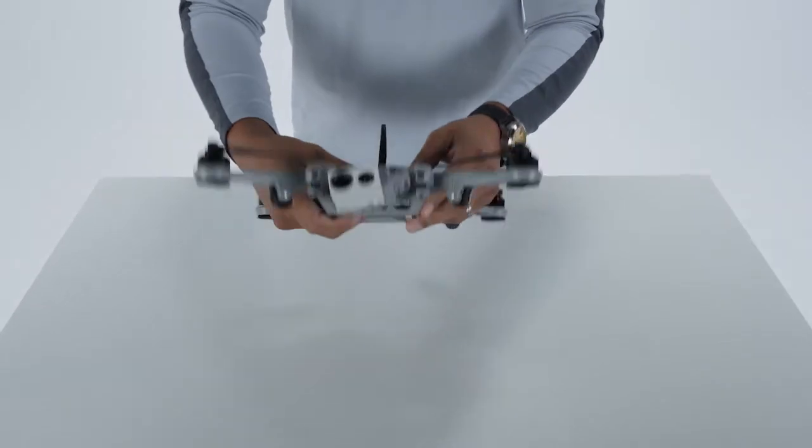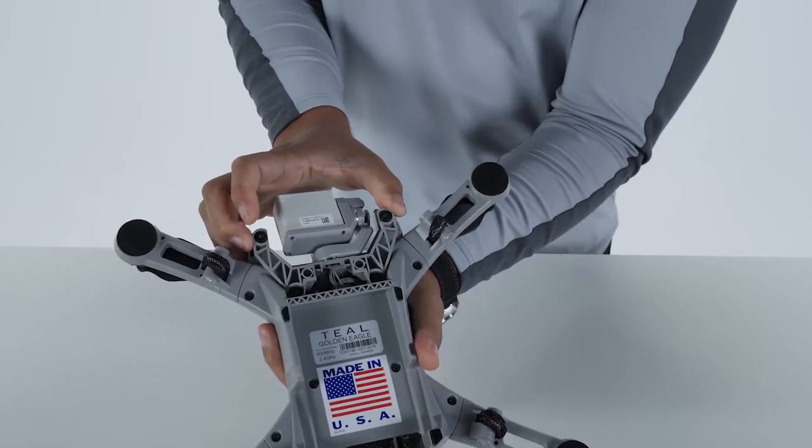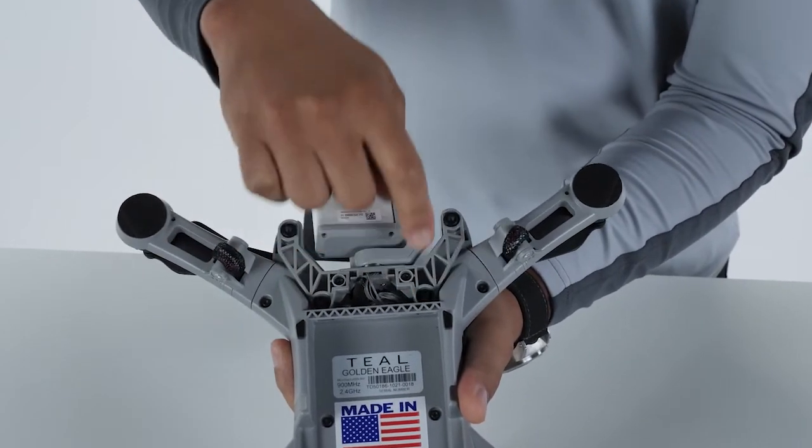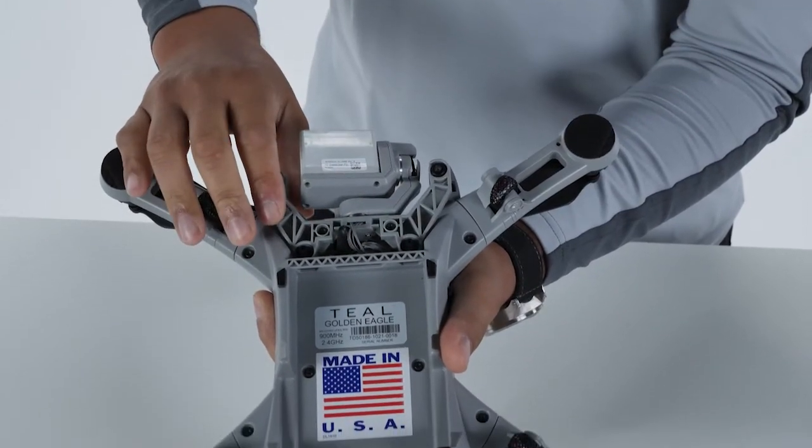With the gimbal protective cover removed, we can inspect the gimbal Flare Hadron EO IR camera. Always check the underside of the gimbal. Inspect the cables and connectors. Also verify the vibration dampening grommets.